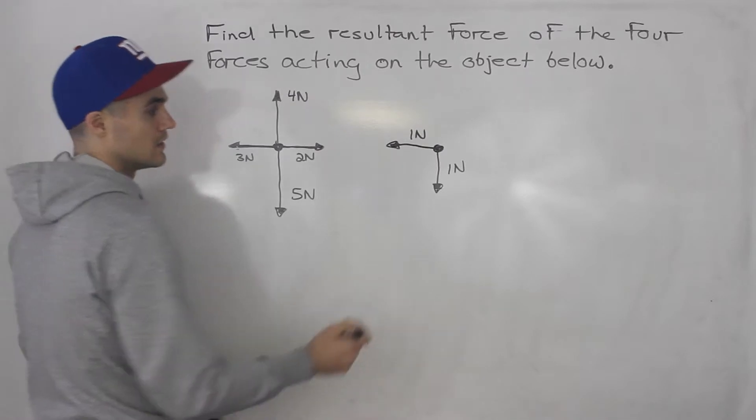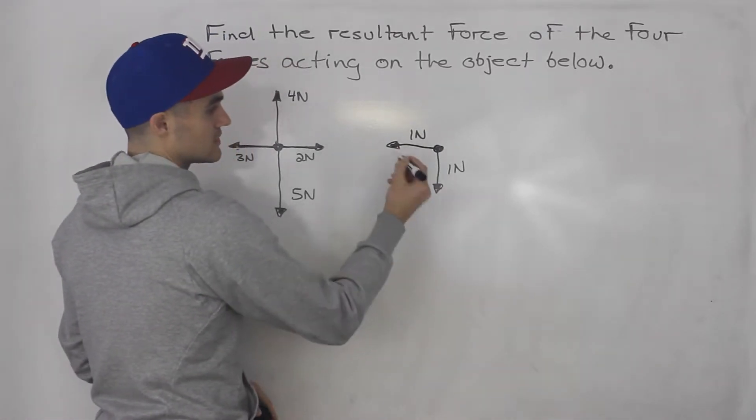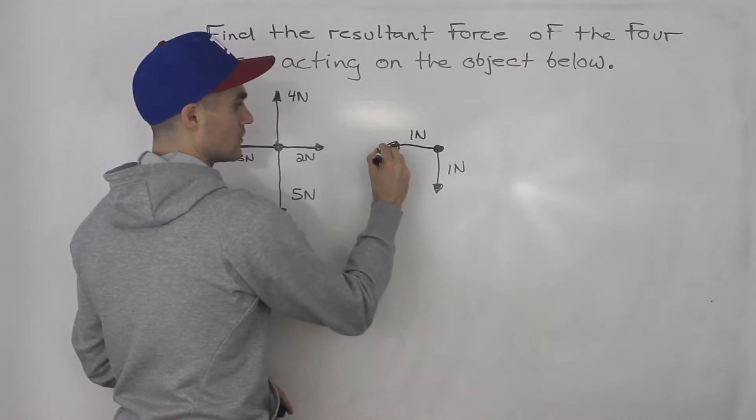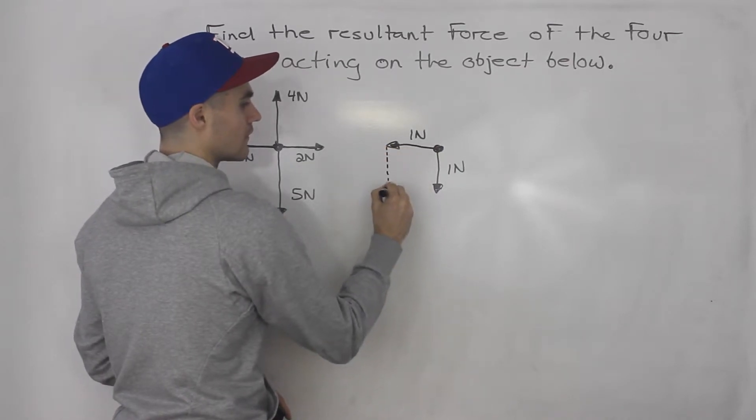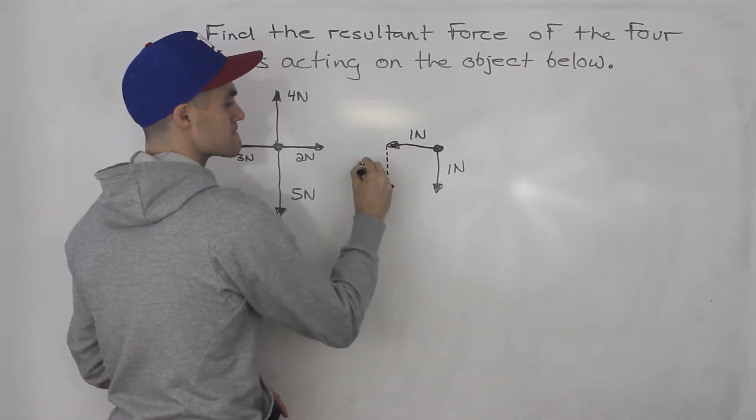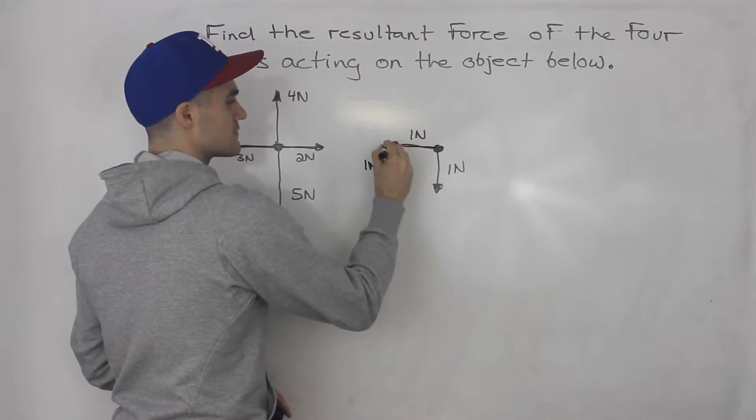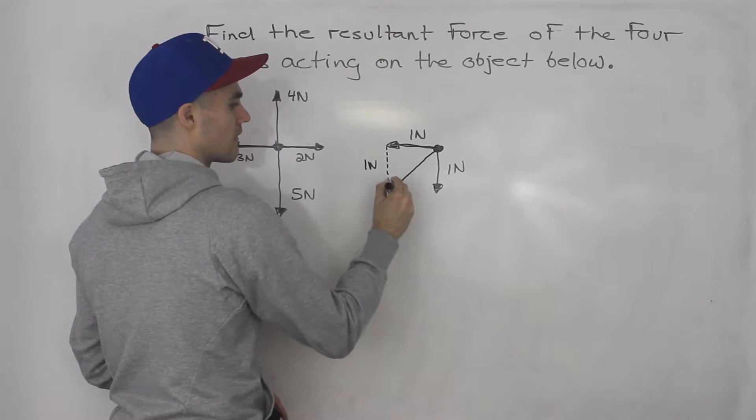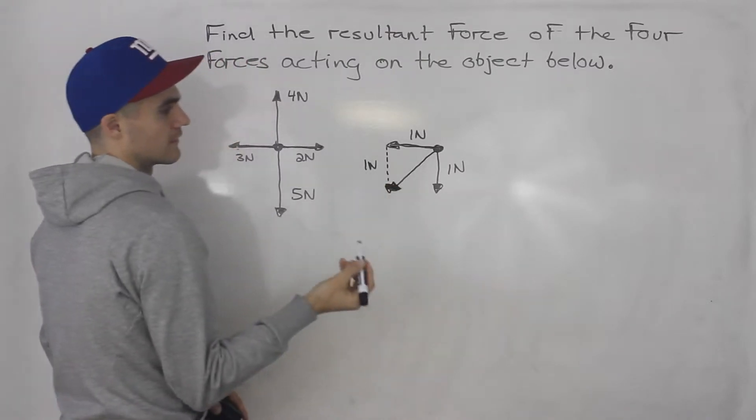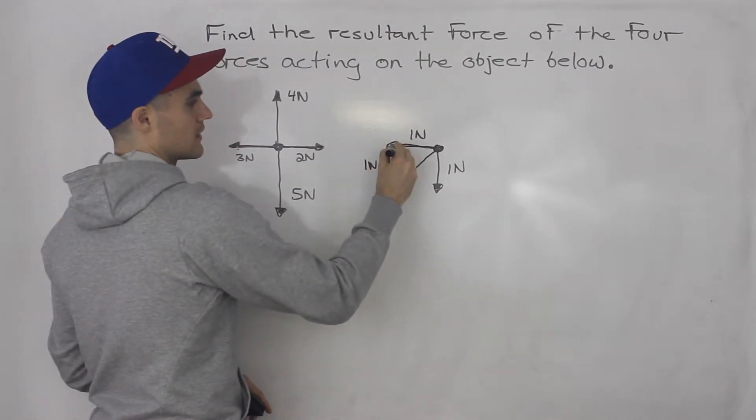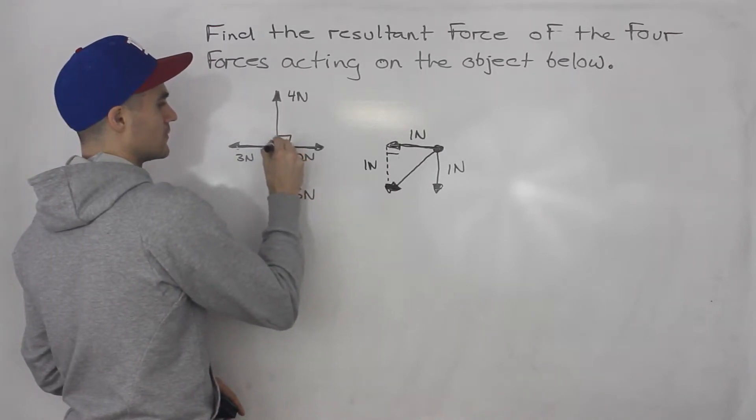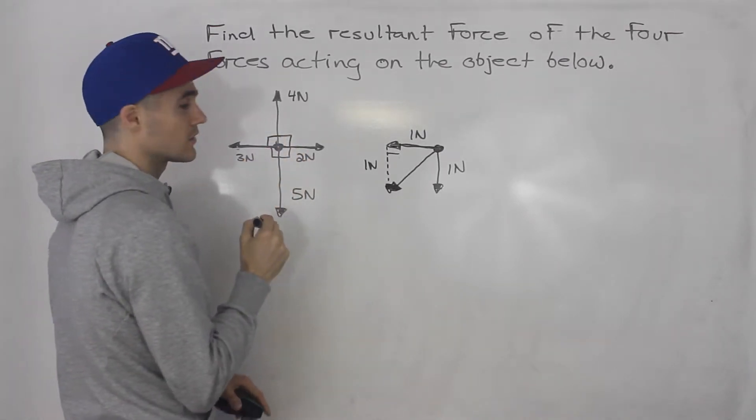So to find the resultant, we basically have to add these vectors head to tail. So I'm going to take this vector, shift it over like that. So we got this vector plus this vector, resultant right there. And this is a 90 degree angle triangle. We're just assuming that these are perpendicular here.